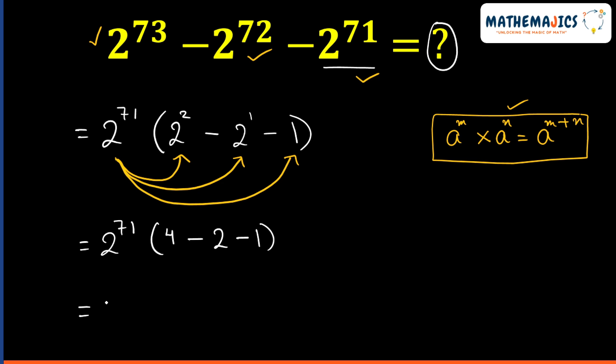Simplifying this further, we will get 2 raised to power 71 times 1. So our final answer for this expression is 2 raised to power 71. This is our final answer.